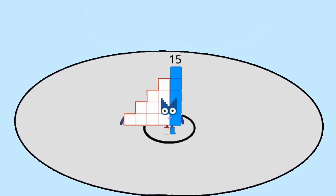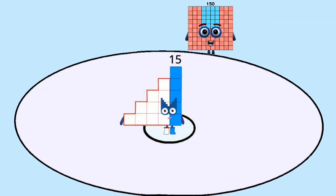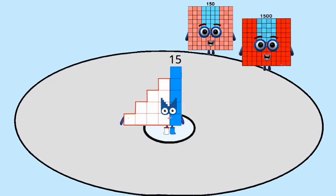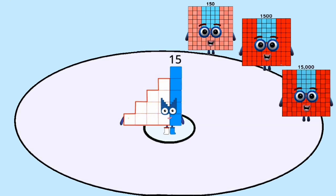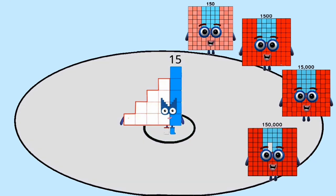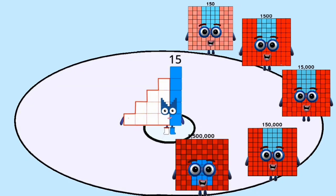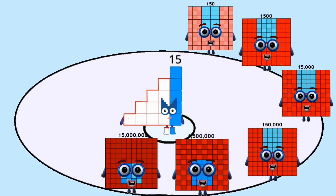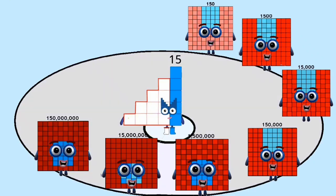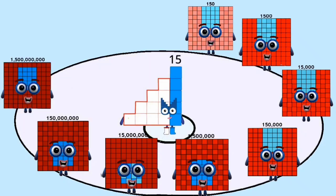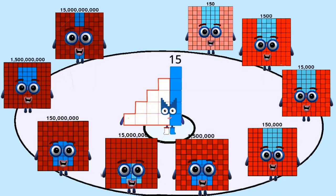Overall total: one thousand five hundred. Fifteen thousand. One hundred fifty thousand. One million five hundred thousand. Fifteen million. One hundred fifty million. One billion five hundred million. Fifteen billion. One hundred fifty billion.